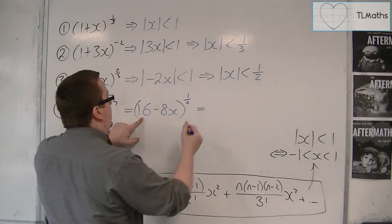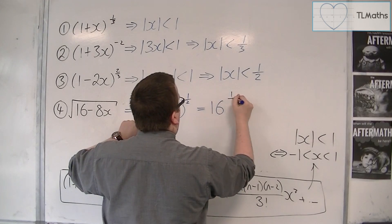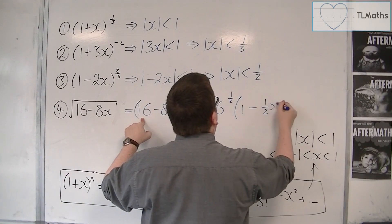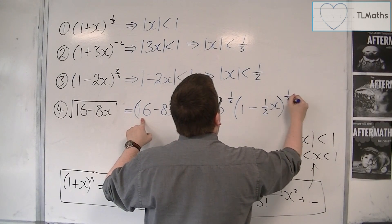So we're going to have 16 to the power of 1 half outside, and we're going to have 1 minus 1 half x inside, and that's to the power of 1 half.